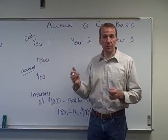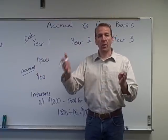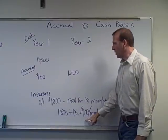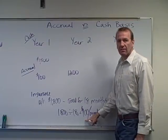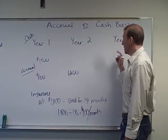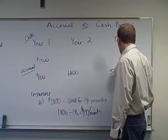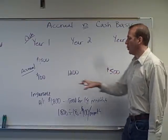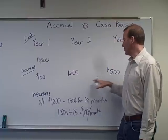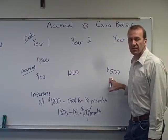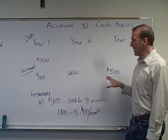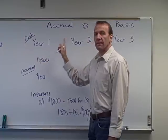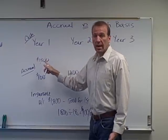In year two, the policy would be in effect for the full 12 months — January all the way through December — so we would have 12 months times $100, which equals $1,200. That leaves five months remaining in year three, so the remaining $500 would be expensed in year three. So we have $100 plus $1,200 plus $500, totaling $1,800.